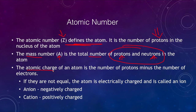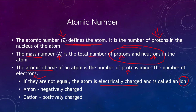The atomic charge is the number of protons — positive charges — minus the number of electrons, which are negatively charged. If we have more protons than electrons, we have a positive atomic charge. If we have more electrons than protons, we have a negative atomic charge. Normally most atoms are neutral, meaning the number of protons equals the number of electrons. But if they are not equal, the atom is electrically charged and we call that an ion. If electrons are added, it is an anion, which is negatively charged. If electrons are removed, it is a cation, which is positively charged.